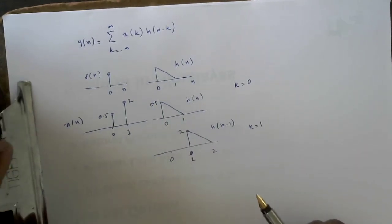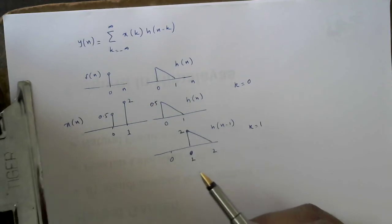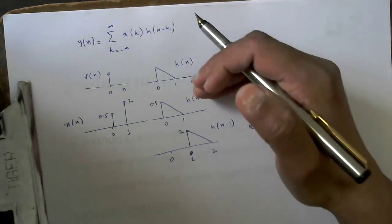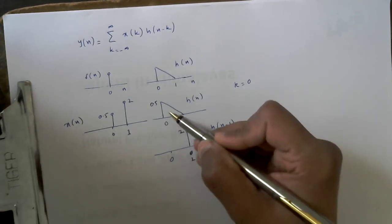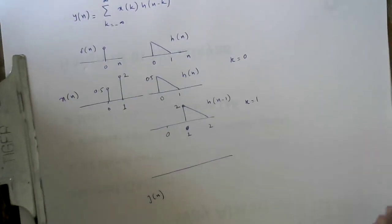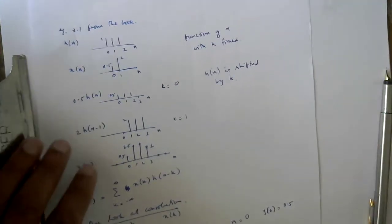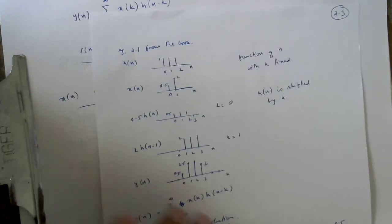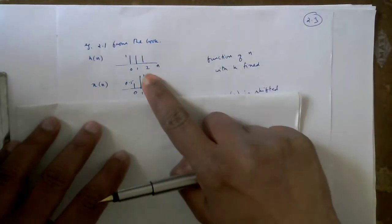This is how you compute the value of y(n), and the sum over various values of k is what you get as y(n). Since the previous example was not very clear, let me take an example from the textbook which I have solved step by step. This is Example 2.1 from the book. My h(n) is like this.